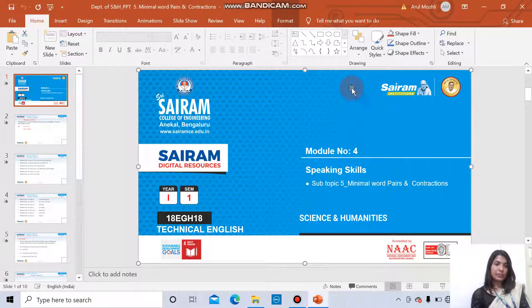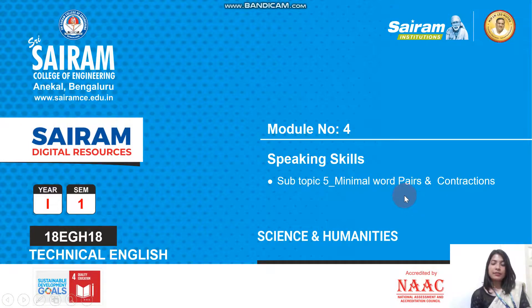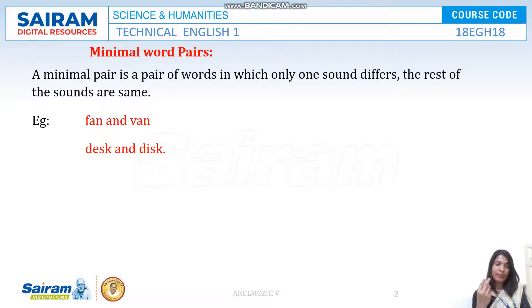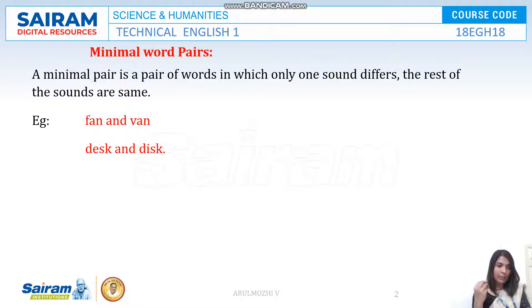Hello everyone, welcome to today's lecture video. In this video we are going to see minimal word pairs and contractions. First, let's look into minimal word pairs. What are minimal word pairs? A minimal word pair has only one sound differing from the rest of the sounds. A pair is a set of two words, so those two words have only one sound differing — the rest would be the same.